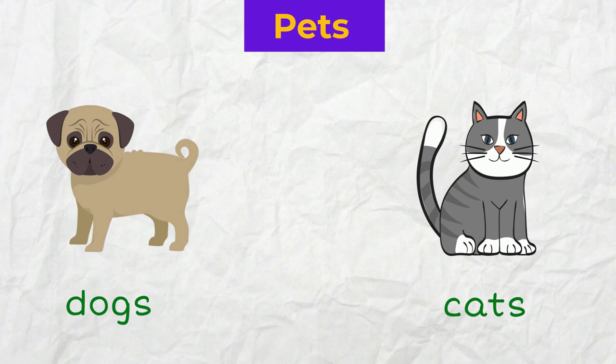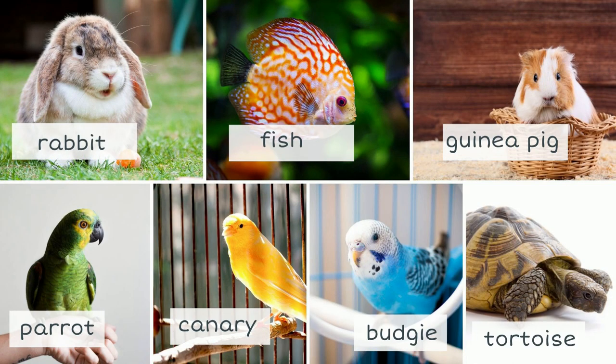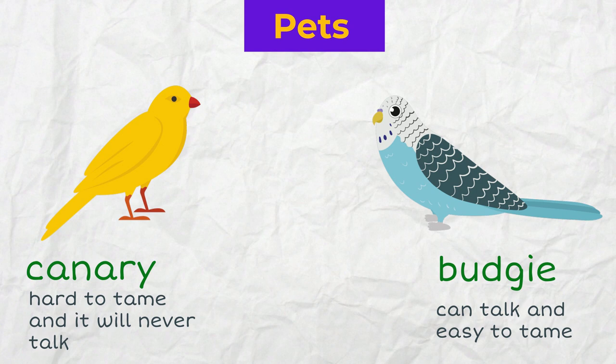Most common pets are dogs and cats, but also it can be a rabbit, a fish, a guinea pig, a parrot, a canary, a budgie, a tortoise. What's the difference between a canary and a budgie? A canary is hard to tame and it will never talk, unlike a budgie that can talk and it's more likely to be tamed.